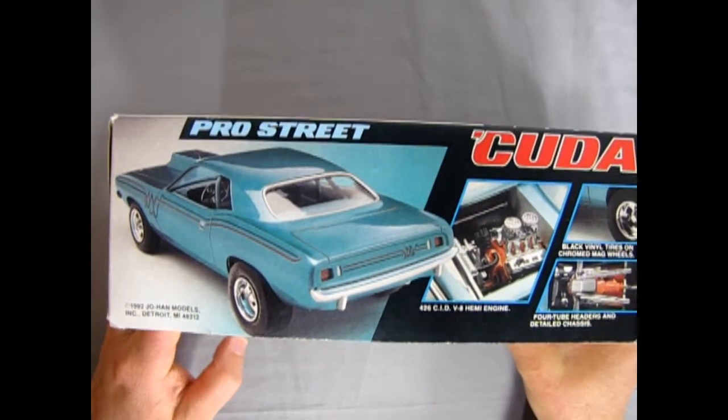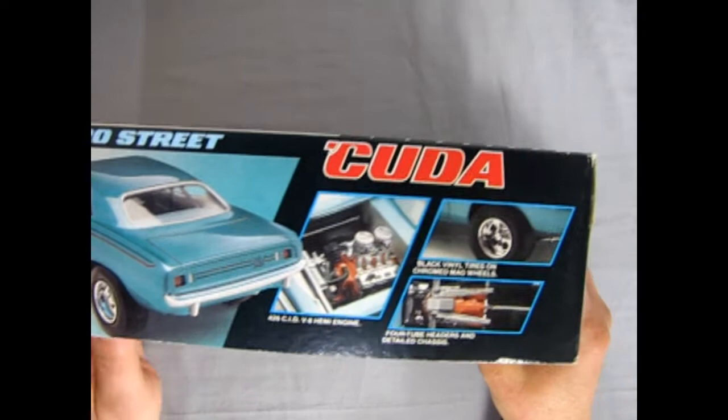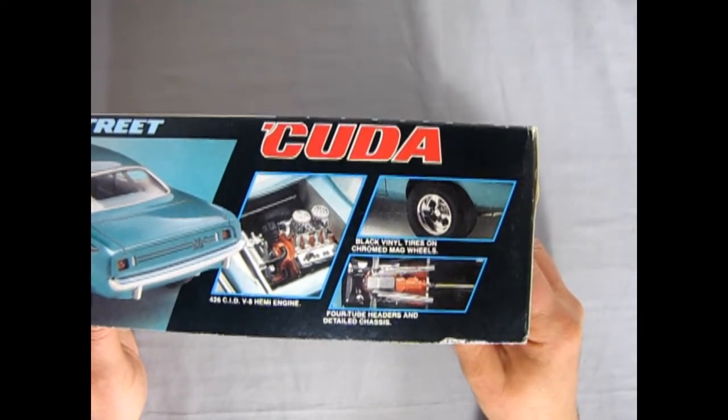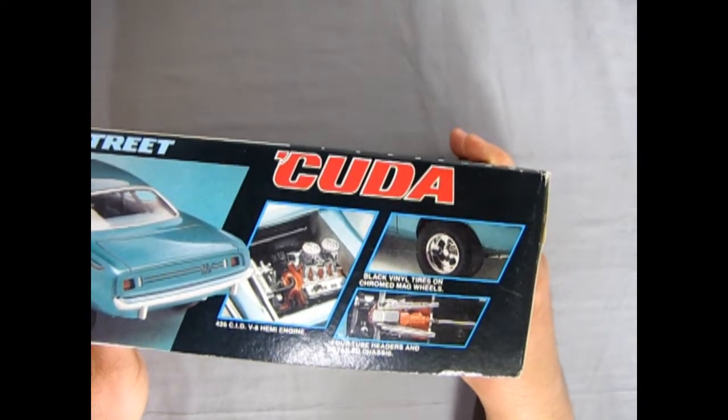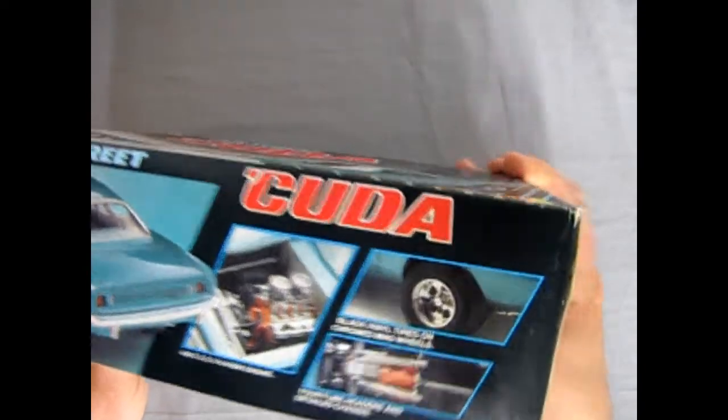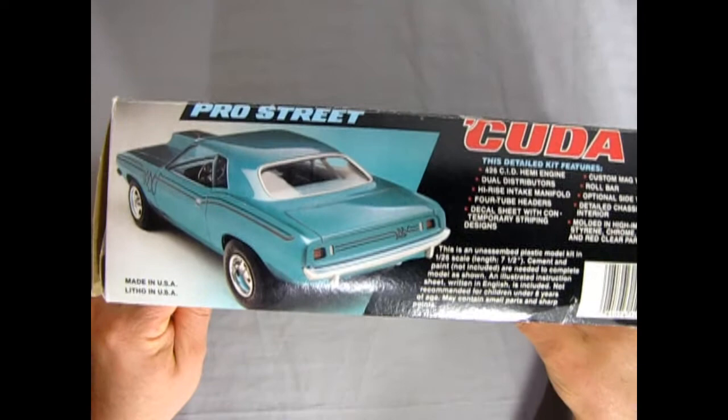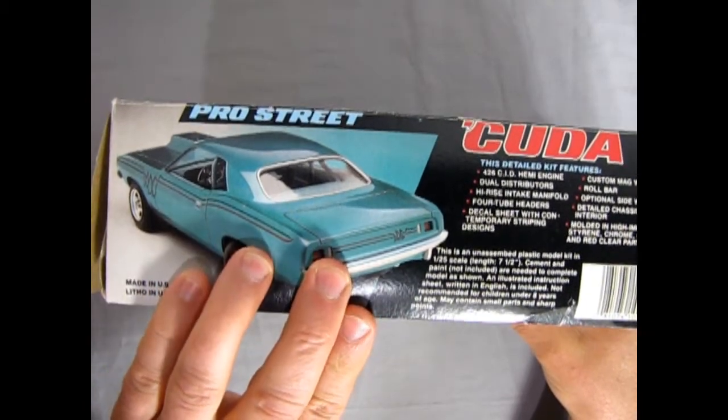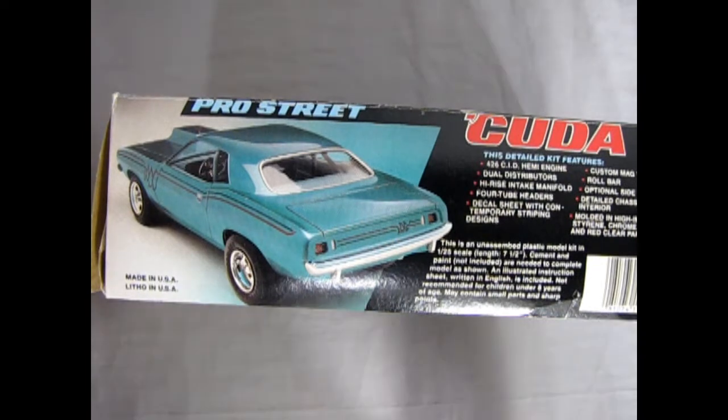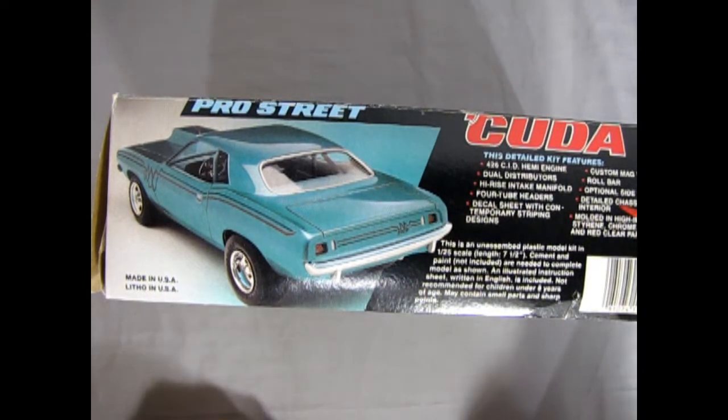So there we've got our Cuda from the rear with our big motor in there and everything else looking all nice and neat. It's got the 426 cubic inch V8 Hemi. The end of the box looks like the front. And then here we've got the low down on all our bits. So this detail kit features a 426 cubic inch Hemi, dual distributors, high-rise intake manifold, four-tube headers.